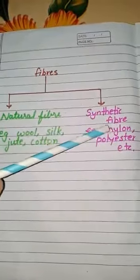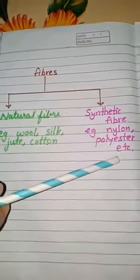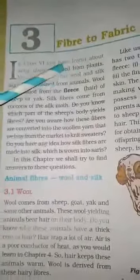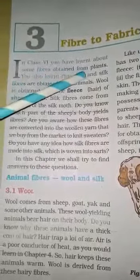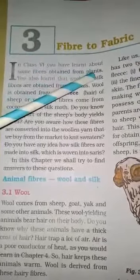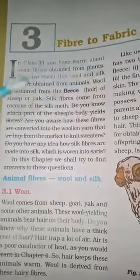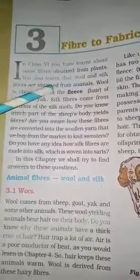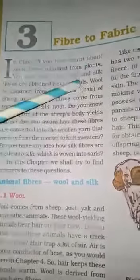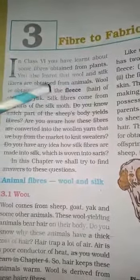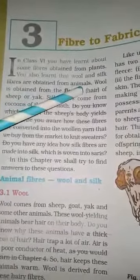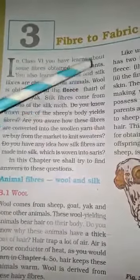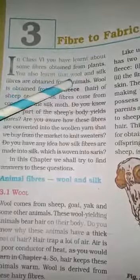Examples of synthetic fibers include nylon, polyester, etc. We have learned about some fibers obtained from plants, and we also have learned that wool and silk fibers are obtained from animals. So these are the natural fibers.